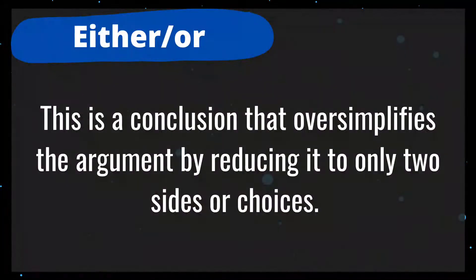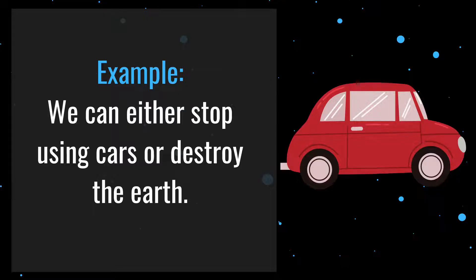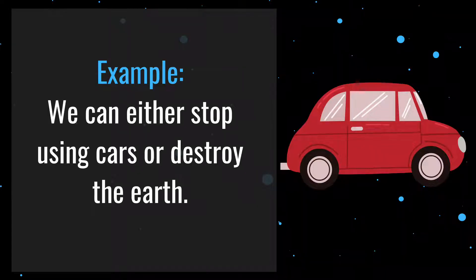Number 7 is either/or. This is a conclusion that oversimplifies the argument by reducing it to only two sides or choices. For example: we can either stop using cars or destroy the earth. The two choices are presented as the only options, yet the author ignores a range of choices in between, such as developing cleaner technology, car sharing systems for necessities and emergencies, or better community planning to discourage daily driving.